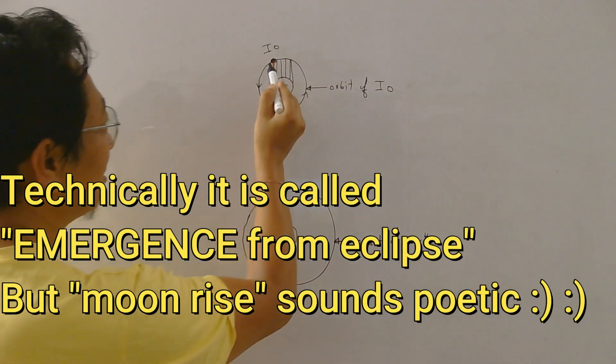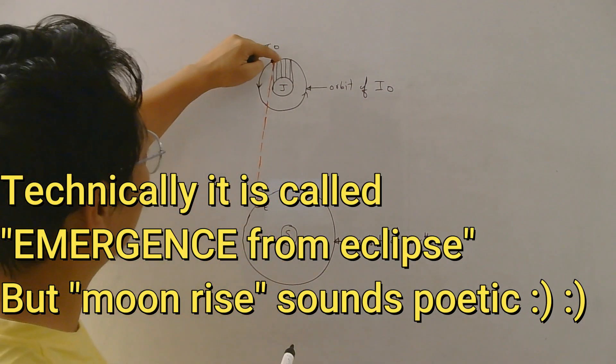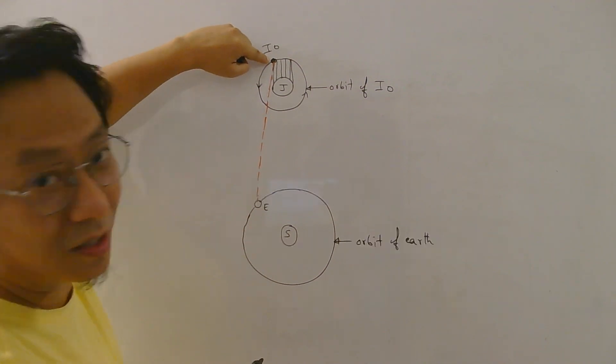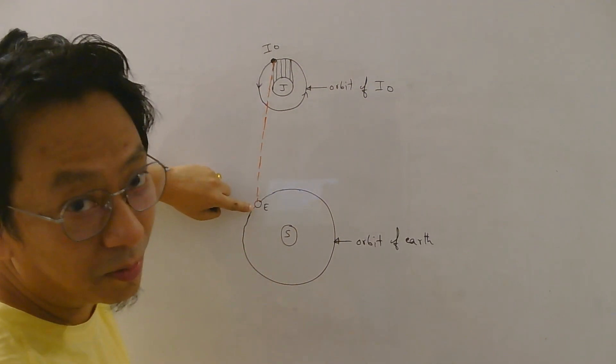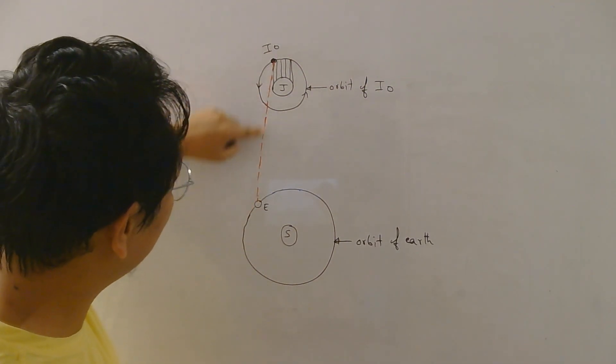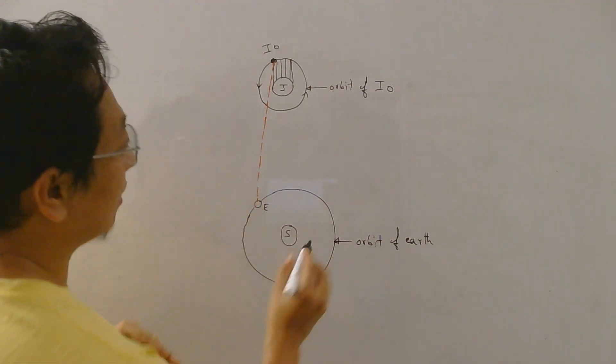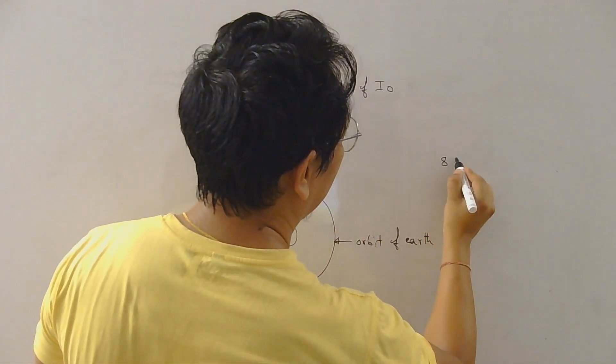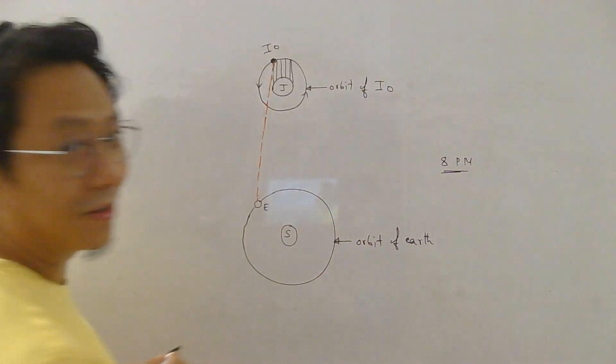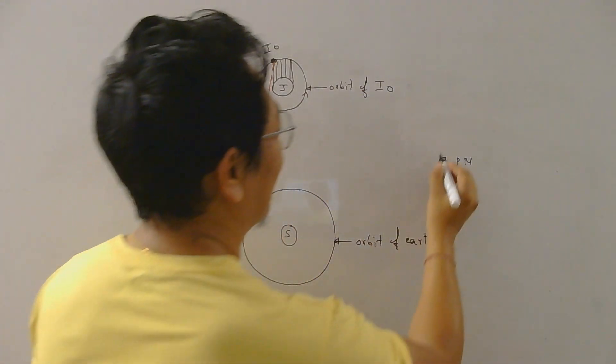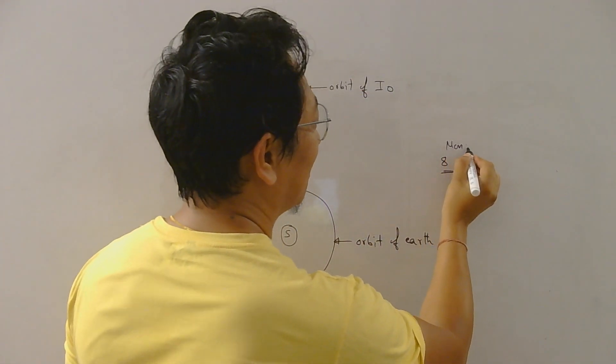So you are waiting for this moon to rise, to come out of this shadow. So let's say when the moon just reaches here, it will be visible to you, and that moment is let's say 8 PM, 8 PM let's say Monday, Monday 8 PM. Okay.